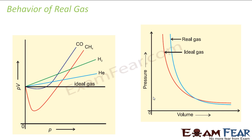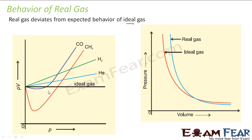Let us take one graph on the behavior of real gas. The real gas actually deviates from the ideal gas — we will explain why. Let us take this graph, graph 1, which is actually graph 2.